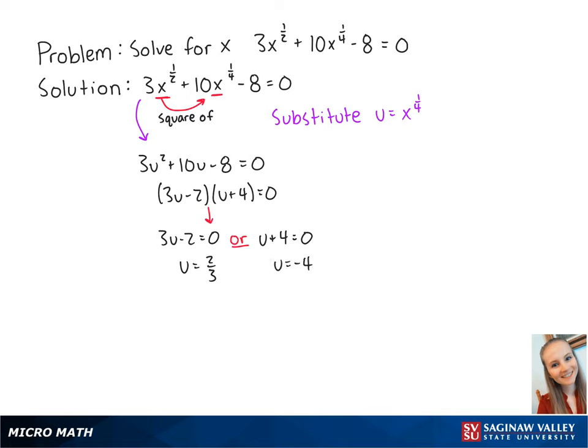Now we can plug in two-thirds and negative 4 into the equation u equals x to the one-fourth power. So we get two-thirds equals x to the one-fourth power, which becomes x equals 16 over 81.